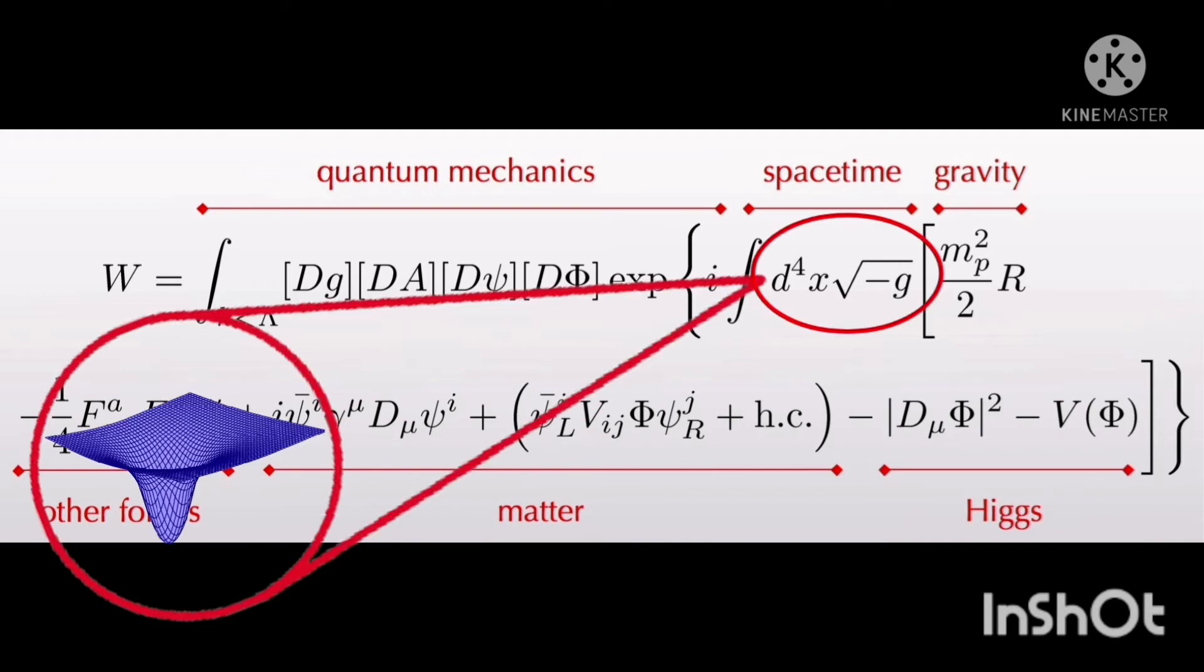D to the fourth power, x, and the square root of negative G are the coordinates of the spacetime continuum and G basically represents gravity.